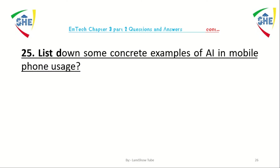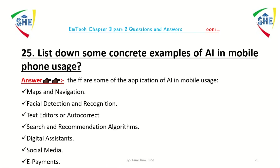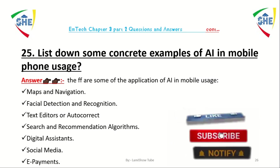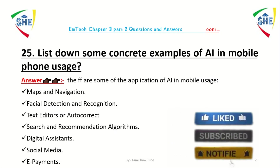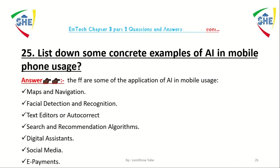Question number 25: list down some concrete examples of artificial intelligence in mobile phone usage. Using a mobile phone, we can use maps and navigation, facial detection and recognition, text editors with autocorrect and grammar checkers, search and recommendation algorithms, digital assistants like Siri and Google Assistant, social media features, and electronic payments.